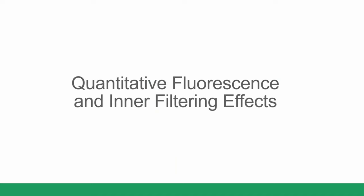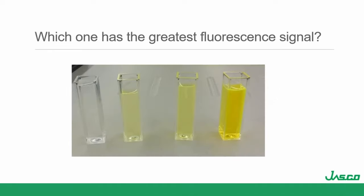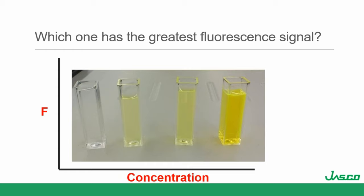A lot of folks don't think much about inner filtering effects. There's a picture of four fluorescent solutions — which one has the greatest fluorescence? If I plot fluorescence versus concentration — I'm pretty low for the most dilute solution, I get an increase in the next one, but already in the third one the fluorescence begins to decrease, and in the last one it's less than the fluorescence of the most dilute solution. We get this rollover — as seen in absorbance — due to these inner filtering effects.